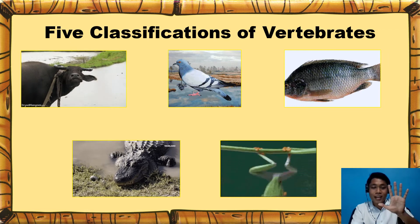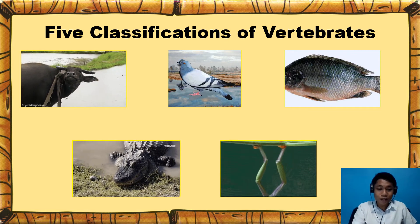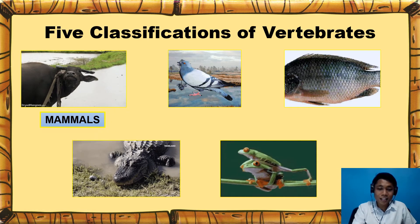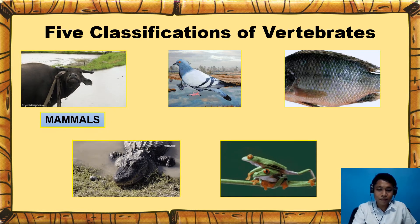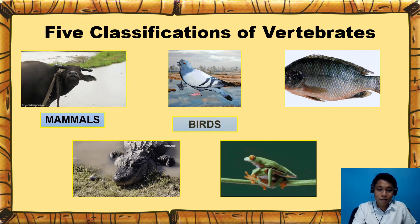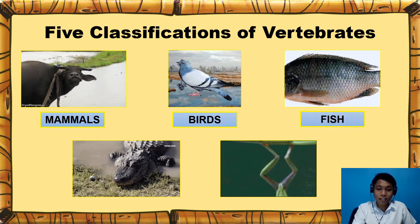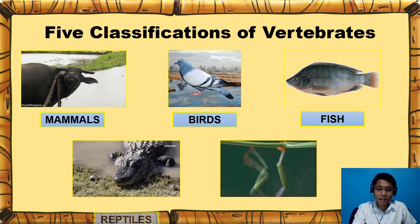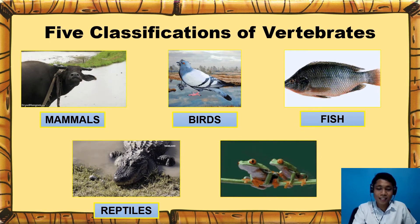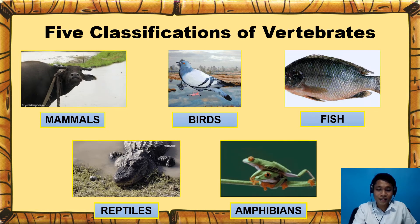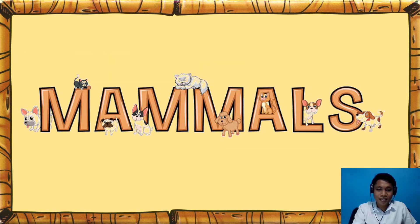There are 5 classifications or groups of vertebrates. We have mammals, birds, fish, reptiles, and amphibians. Now, let's talk about mammals.